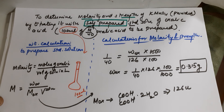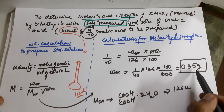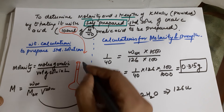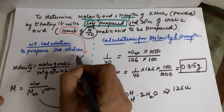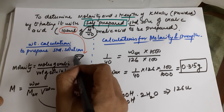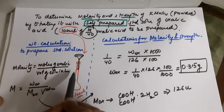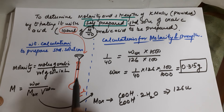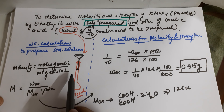For preparing the solution, you first weigh 0.315 g of oxalic acid and introduce it into your measuring flask — always using a funnel. Once you add the oxalic acid through the funnel, add water until you reach the marked level. That prepares your standard oxalic acid solution to be used for titration.